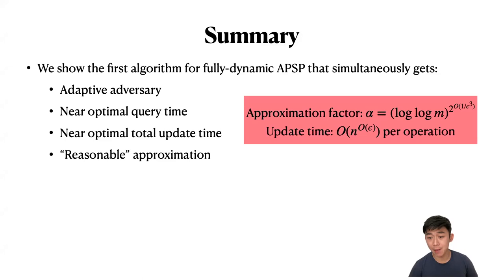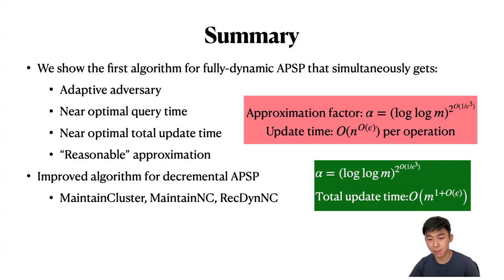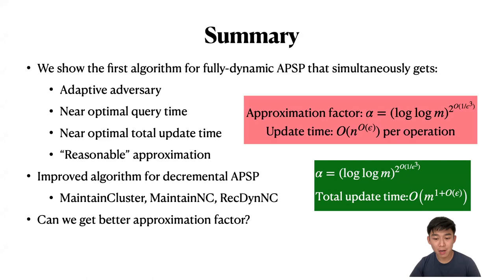In summary, we show the first algorithm for fully dynamic APSP that simultaneously handles adaptive adversary, near optimal query time, near optimal total update time, and reasonable approximation. We also give an improved algorithm for decremental APSP, and along the way improve algorithms for Rec-DynNC, Maintain Cluster, and Maintain NC. One open problem is whether we can achieve a better approximation factor — the only bottleneck lies in the Maintain NC problem. Thank you.